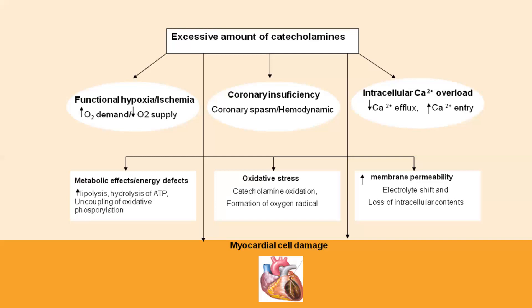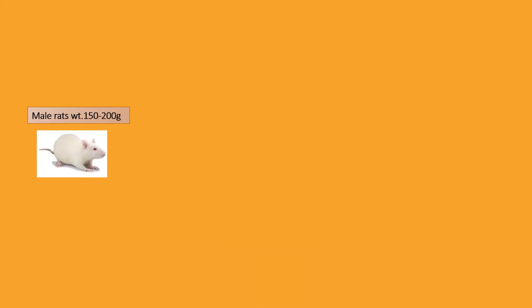Now let's see how the model is developed. For this, you have to take male rats with a weight range between 150 to 200 grams. Each group includes one normal control, one disease control, and treatment groups. In each group, a minimum of 10 animals are required because mortality with isoprenaline is high. As a safe measure, one should take 10 rats per group.